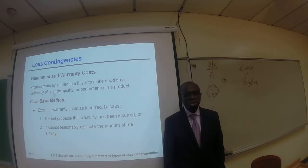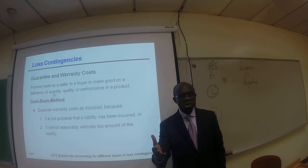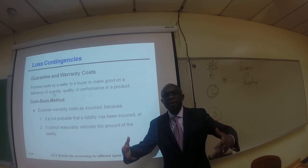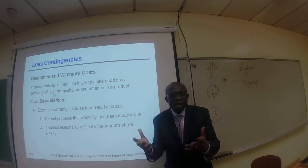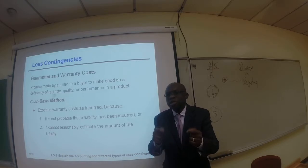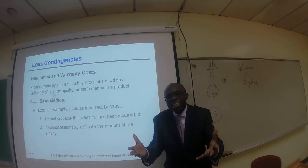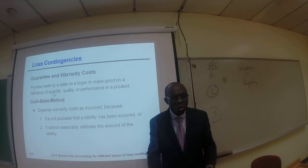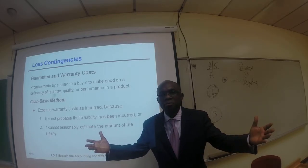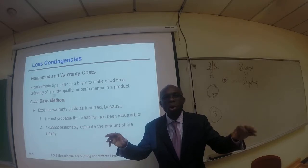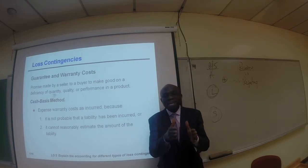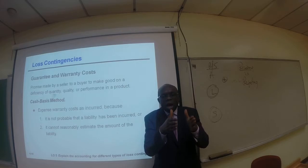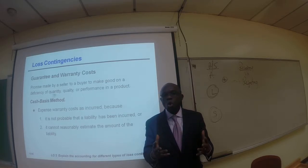One loss contingency we usually accrue for is guarantee or warranty cost. Typically, a manufacturer — let's assume a television set — would offer a one-year warranty guaranteeing the TV will work as expected for at least one year. When they produce 10,000 TV sets, it is not a question of whether some might not work, but how many of them might not work within a year. At year end, we need to accrue and make a provision for the warranty expense.